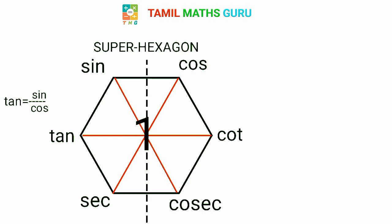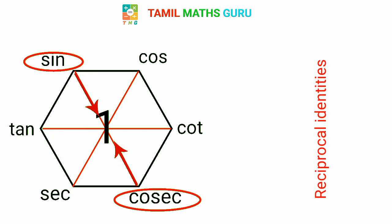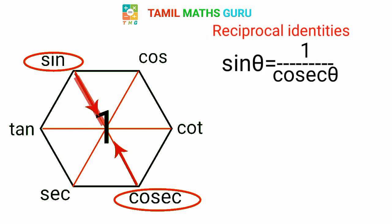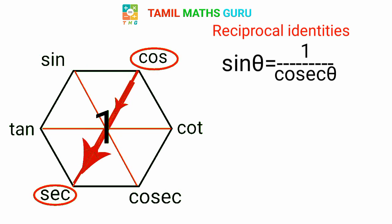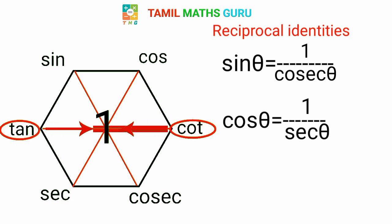Reciprocal identities — we already know what a reciprocal is. For example, if there is x, its reciprocal is 1 by x. In trigonometric ratios, sinθ reciprocal is 1 by cosecθ. Cos reciprocal is 1 by secθ. We already know that tan and its opposite, cotθ, is equal to 1 by tanθ.